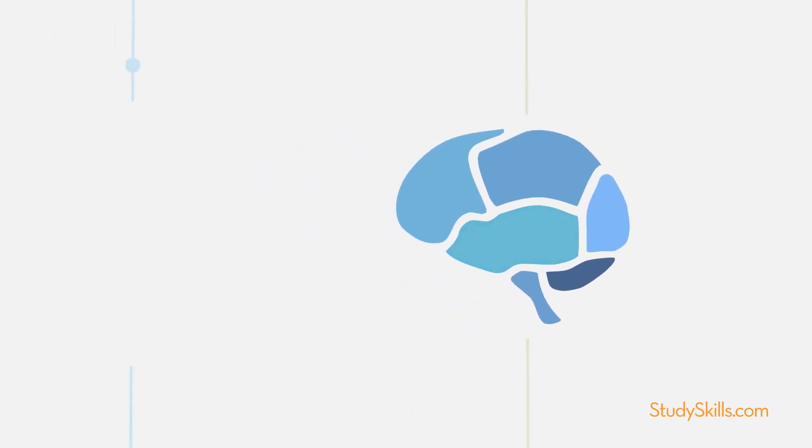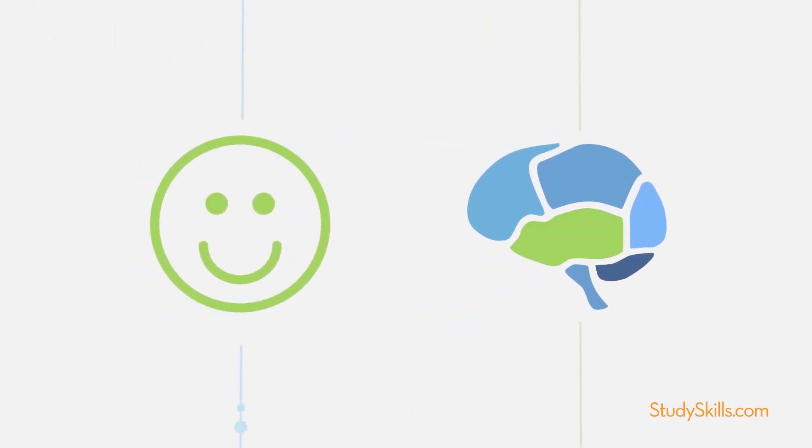When the emotional region of your brain is happy, comfortable, and engaged, it makes a lot of brain chemicals. This provides a hefty power boost to the rest of the brain, making learning happen with ease.